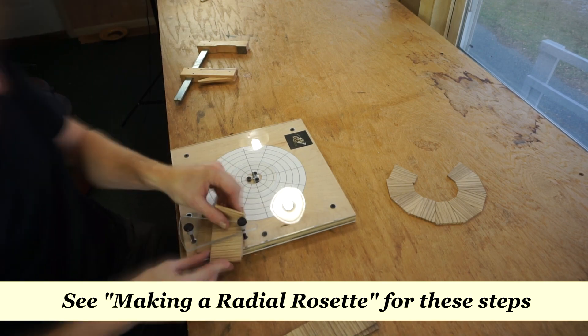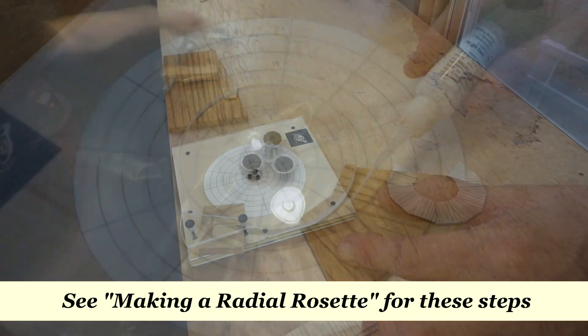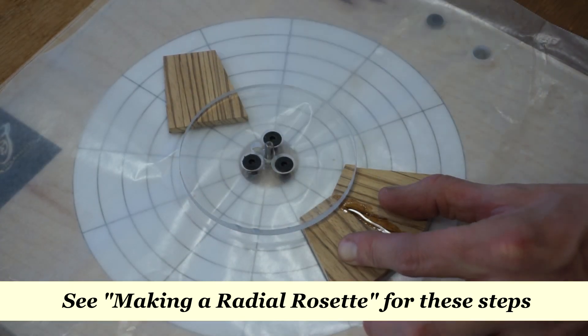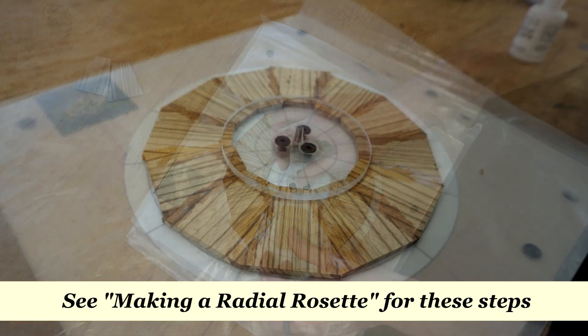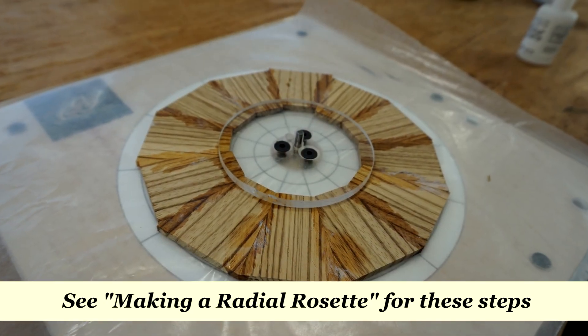Now with the pin in its proper place you can cut the radial segments and assemble the rosette. As I already mentioned, these steps are covered in detail in the Making a Radial Rosette video so I won't cover them here. Let's skip to the part where the radial rosette segments are already assembled.